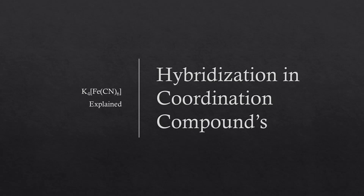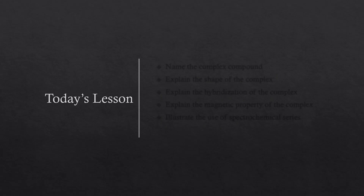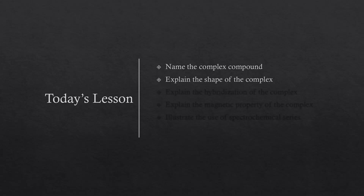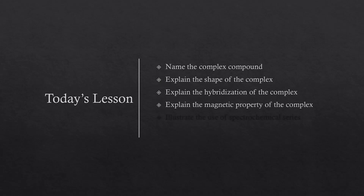The first example I am going to take is potassium hexacyanoferrate(II). In today's lesson, we will name the complex compound, explain the shape of the complex, explain the hybridization of the complex, explain the magnetic property of the complex, and illustrate the use of the spectrochemical series in predicting the magnetic property.